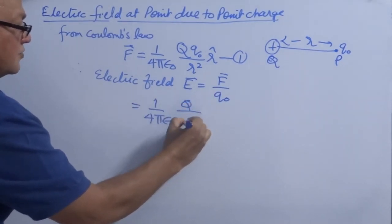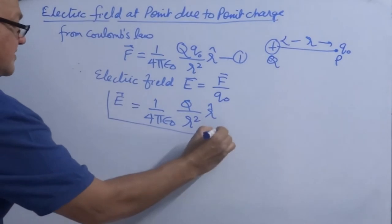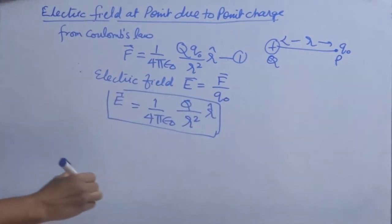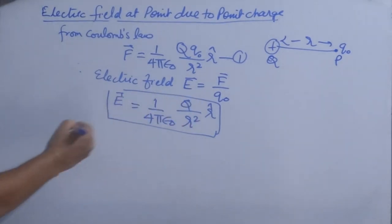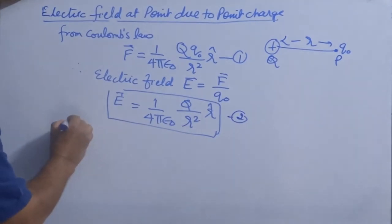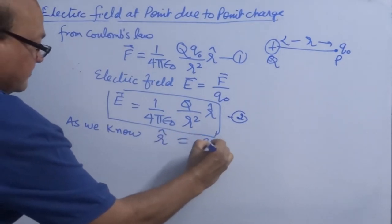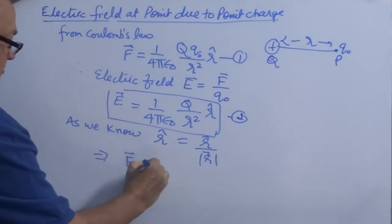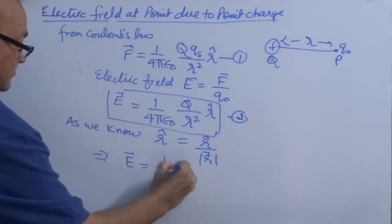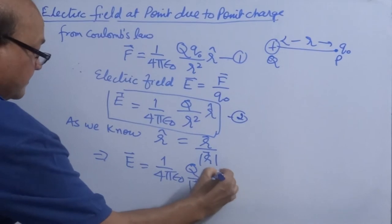You can see in this expression that electric field is independent of test charge because you have already taken test charge as a very small quantity. Elaborating further, since unit vector r̂ = r⃗/|r|, the electric field becomes E⃗ = (1/4πε₀) · (q/|r|²) · r⃗, giving the vector form of the electric field due to a point charge.